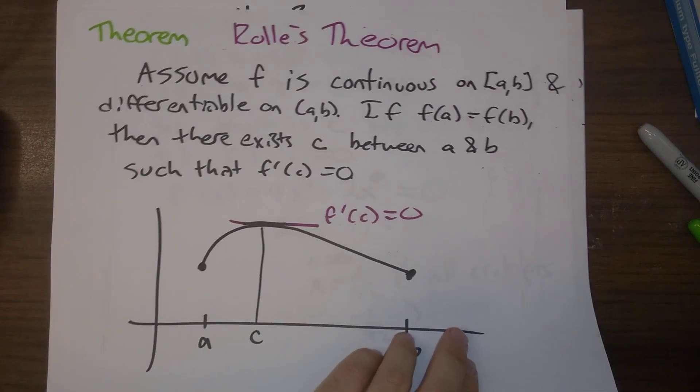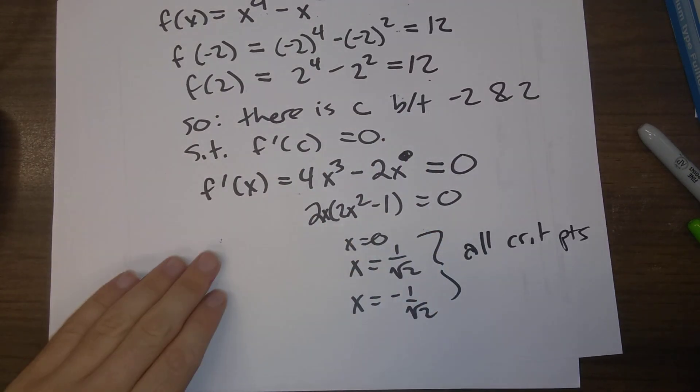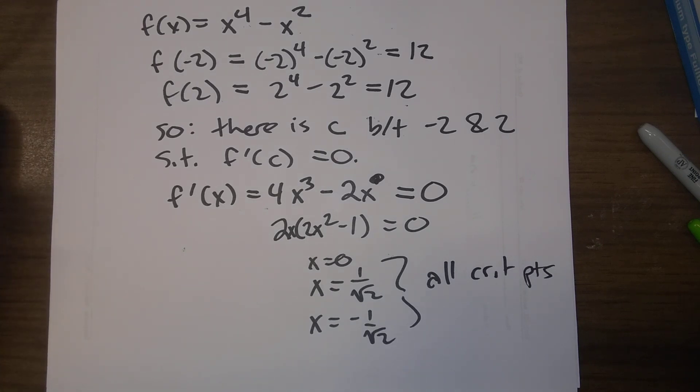So, Rolle's theorem says there exists a c. Here, there's actually three different c's. All of them are between minus 2 and 2. And so, let's call it a wrap. So, section 4.2.